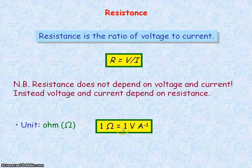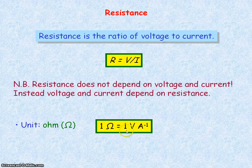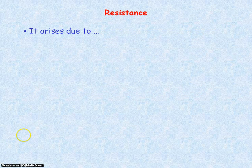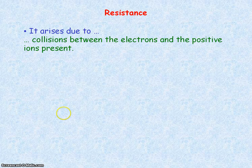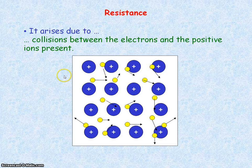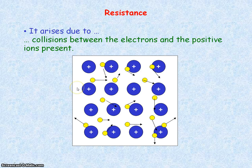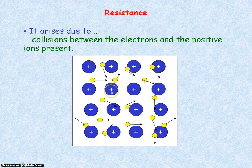One ohm equals one volt per ampere. One ohm of resistance is equal to one volt of potential difference per ampere of current. Resistance occurs due to the collisions between electrons and the fixed positive ions present. The electrons in a conductor cannot flow freely; their motion is impeded and restricted due to the positive ions.